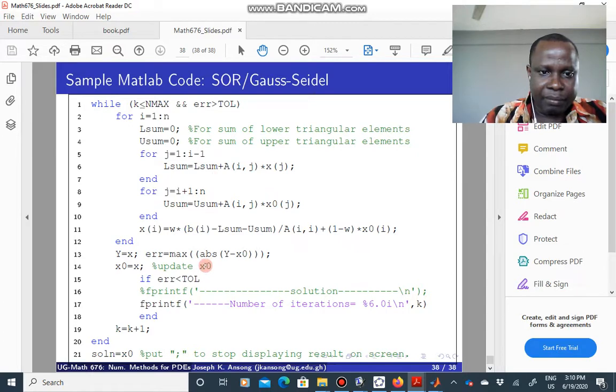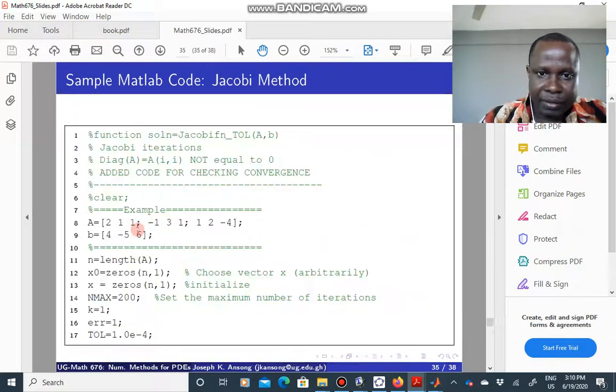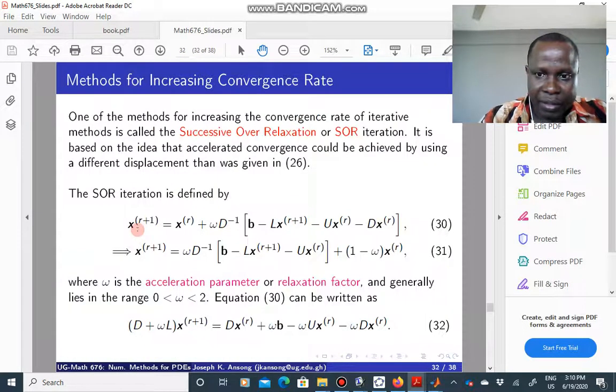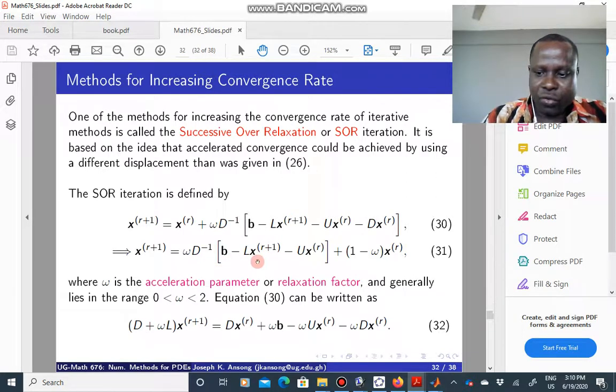This is the same, basically the same. You have the formula for the SOR. You have the relaxation factor here. So here I am using equation 31 in the lecture notes. Let me just check that. I think it's equation 31. So I just, you can use this. You could also use this. It doesn't really matter. They are the same. I used 31 in the code.